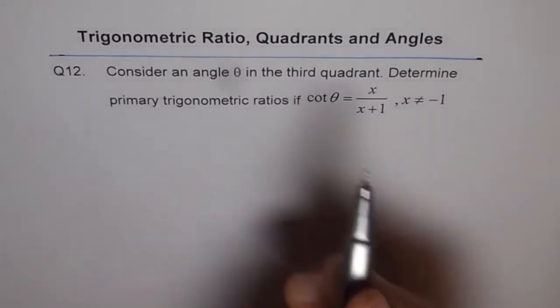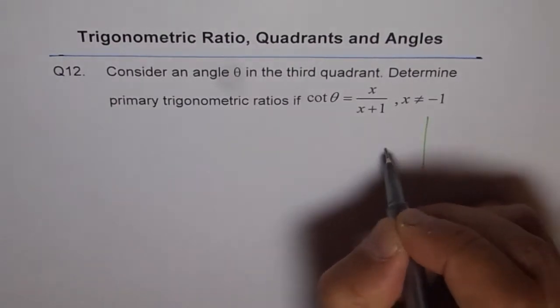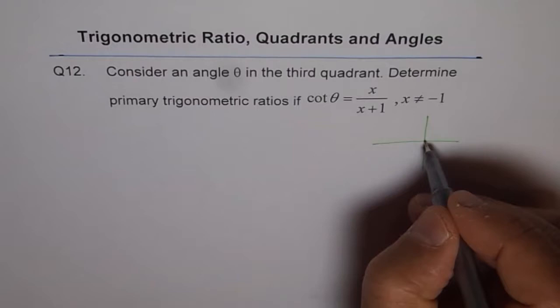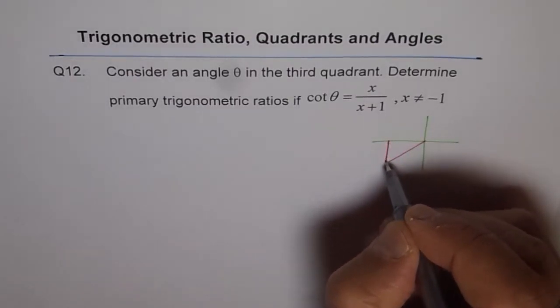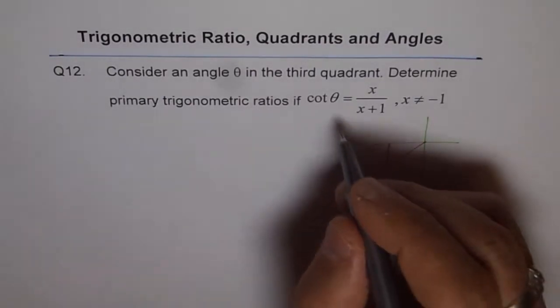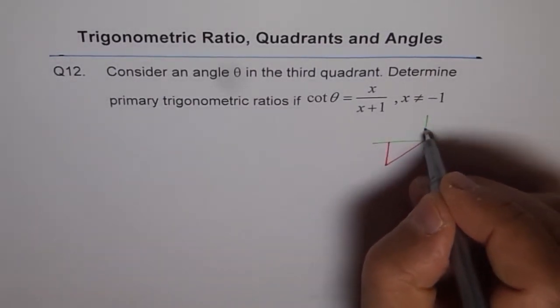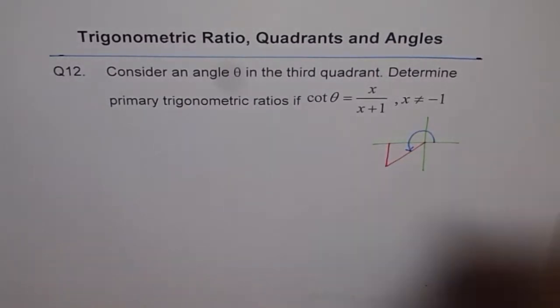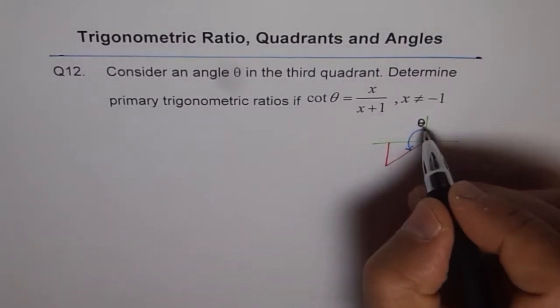Now consider an angle theta in the third quadrant. That means that is the third quadrant. We will make a triangle here. Always when you make a triangle, draw the perpendicular on the horizontal x axis. When we say theta, we mean this angle. So that is the angle theta which we are always talking about, and that is the principal angle.